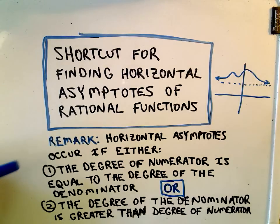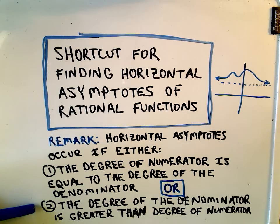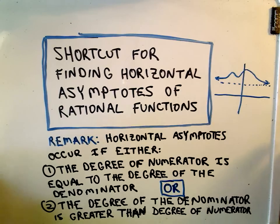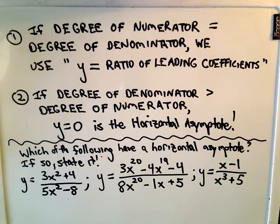Again, not all rational functions have horizontal asymptotes. One of two things has to happen. Either the degree of the numerator has to be exactly equal to the degree of the denominator, or the degree of the denominator is greater than the degree of the numerator. And in those two cases, that's when we'll have horizontal asymptotes.